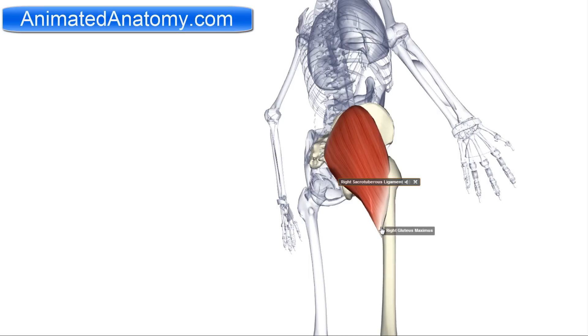You should remember that. This muscle is innervated by the inferior gluteal nerve. It serves for the external rotation and the extension of the hip joint.